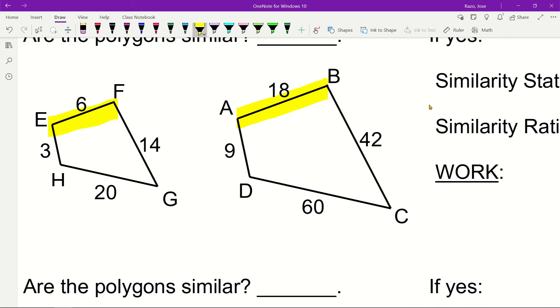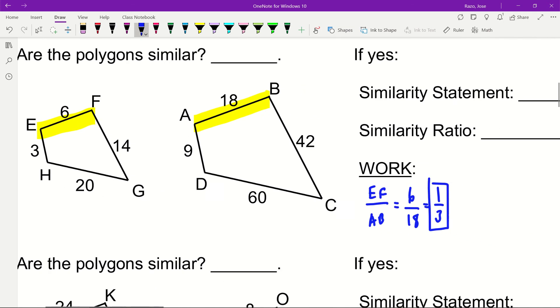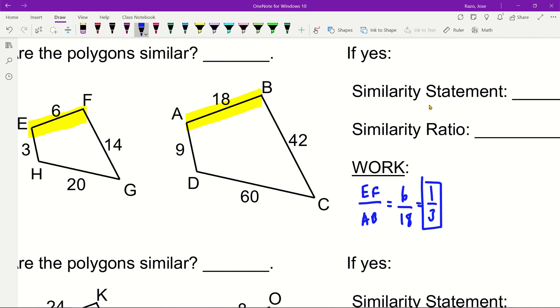We have EF over AB, so EF is six over eighteen. If I reduce that, it becomes one-third. So I have one-third as my possible similarity ratio - this one is one-third the size of my second polygon.